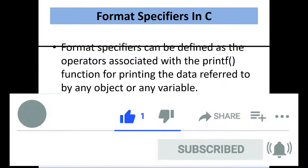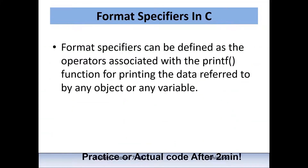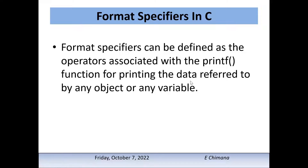Format specifiers in C programming are just like placeholders — we use them as placeholders where we will put the actual value from our variables at runtime. They are operators associated with the printf function for printing the data referred to by any variable. We use format specifiers to print the value of our variable because in C programming we cannot print the variable straight to the console. We pass it through the format specifier, and they always start with a percentage sign followed by a character specifying the data type.